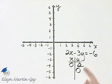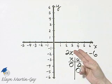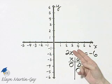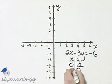What about if y is zero? If y is zero, this term is gone, and I'm solving 2x equals -6, divide both sides by 2, and I would have that x is -3.